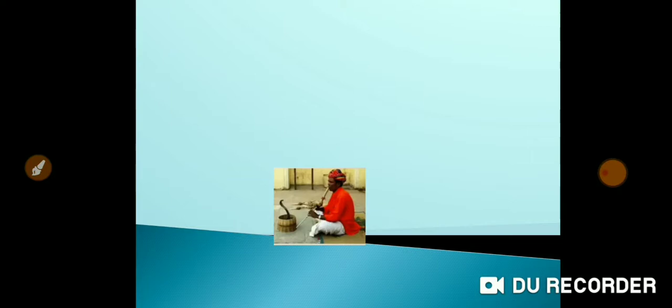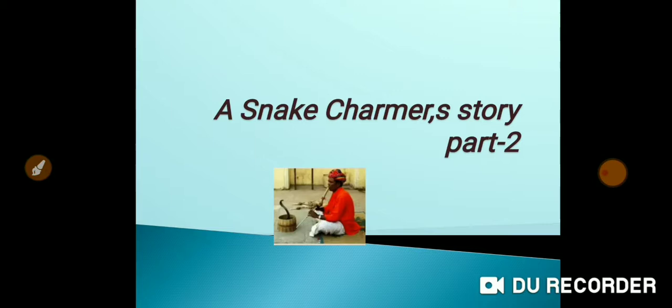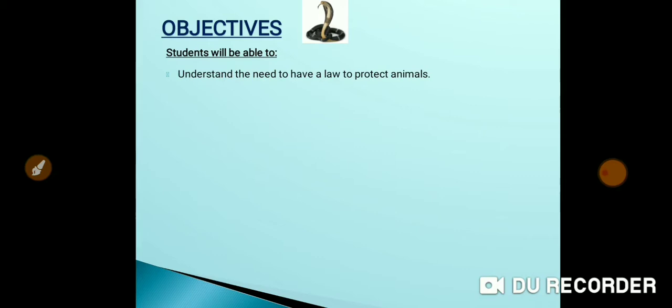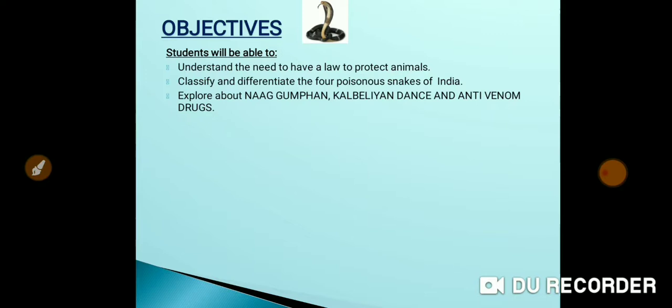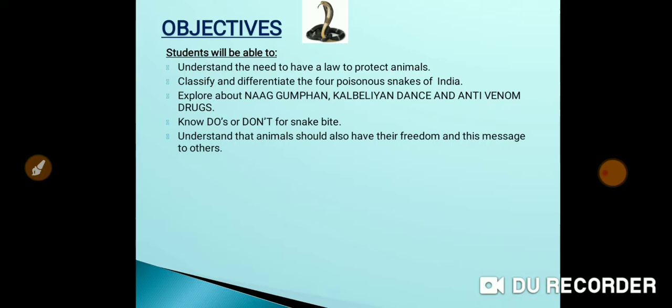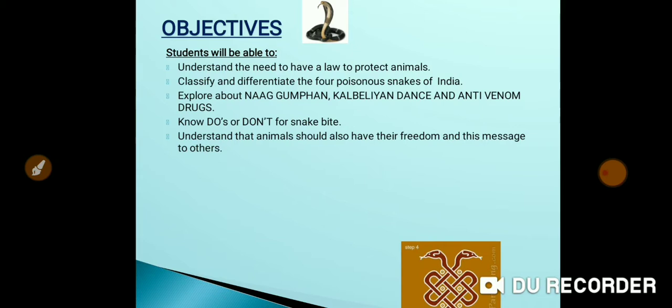Good morning students, welcome to EVS class. Today we will study Class 5 EVS Chapter 2, Part 2 - A Snake Charmer's Story, Part 2. The objectives are: students will be able to understand the need to have a law to protect animals, classify and differentiate the four poisonous snakes of India, explore Nag Gumpha, Kalbelia dance, and anti-venom drugs, and understand that animals should have their freedom.